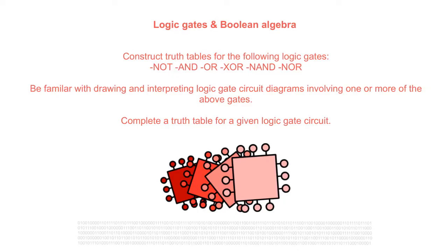In this video and the next one, we're going to look at how you construct truth tables for the following logic gates: NOT, AND, OR, XOR, NAND and NOR.